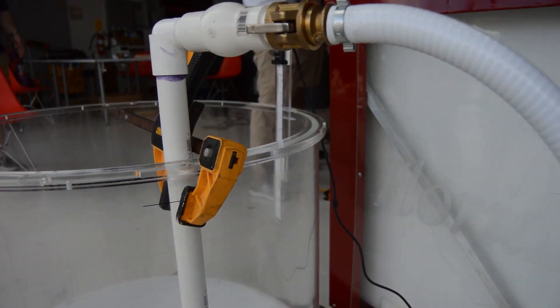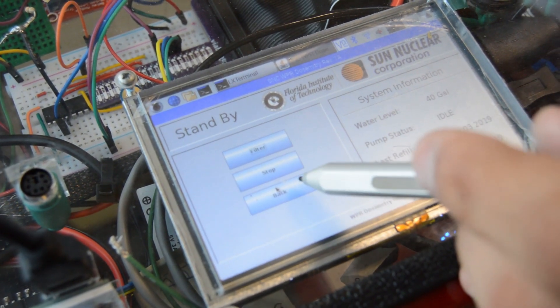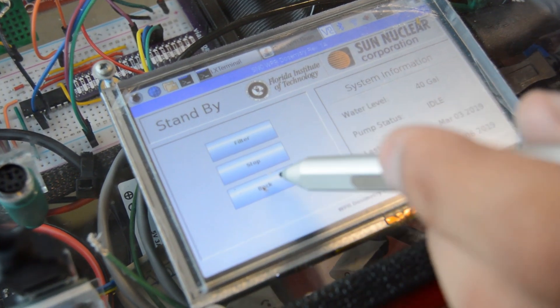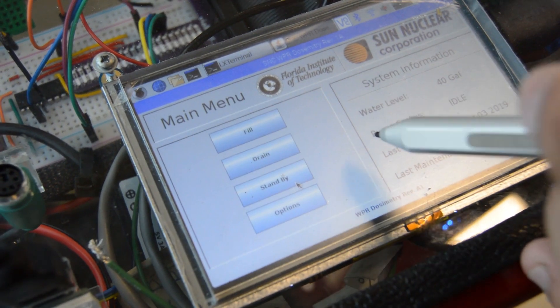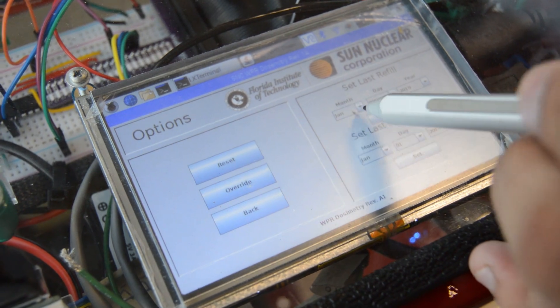We went ahead and added a more complex user interface to the system. We have a touchscreen with a Raspberry Pi that interfaces with a filter and a UV light we've installed inside the tank to reduce corrosion. It also allows the user to check system maintenance and status.